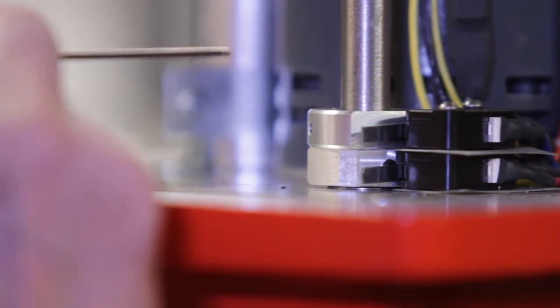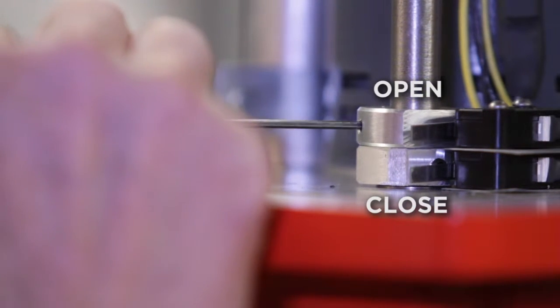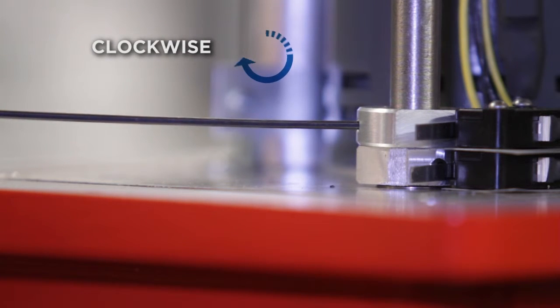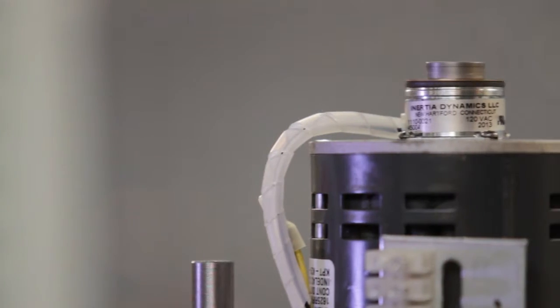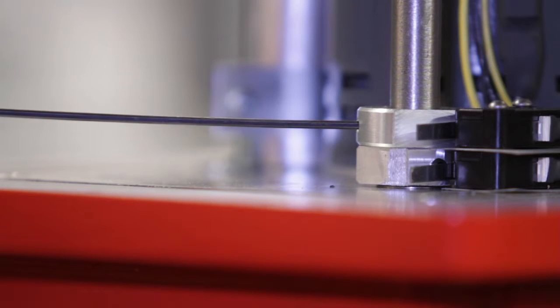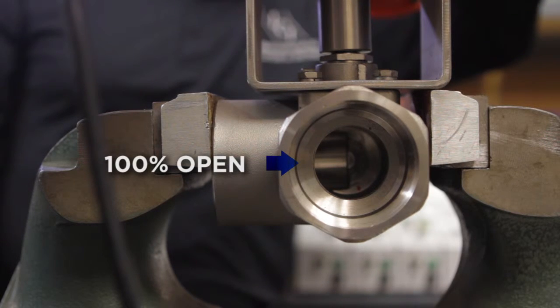Using the 5/64 inch Allen wrench, loosen the set screw securing the top cam to the motor shaft. Rotate the cam clockwise slightly. The motor will now begin to run. By making small incremental adjustments to the cam, you will be able to position the actuator exactly where you want it.